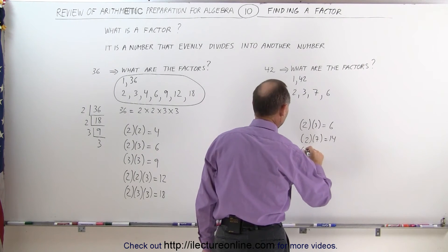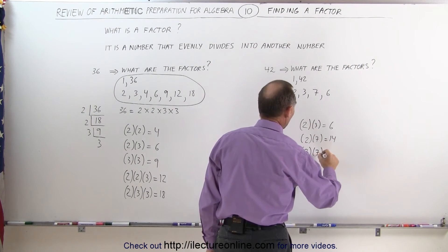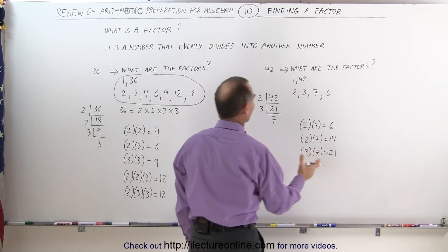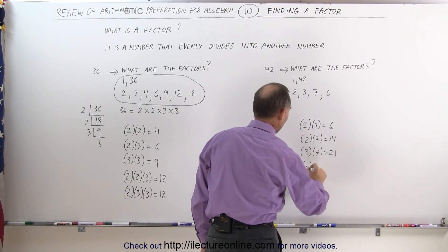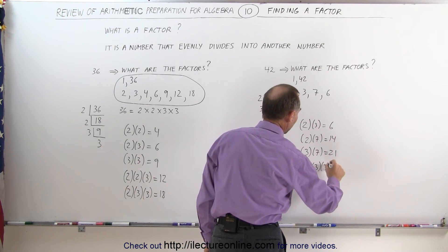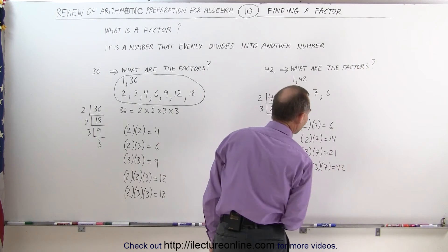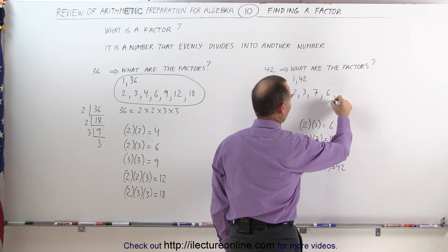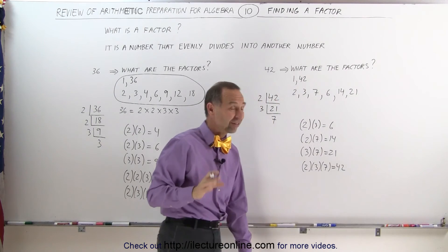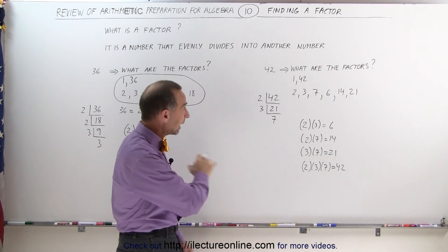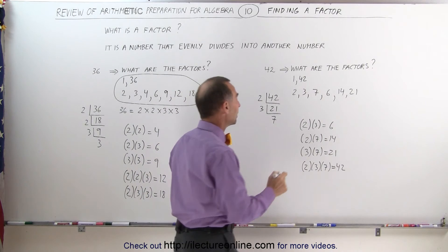Then the next multiplication, 3 times 7, which is 21. And then, of course, when you multiply all three of them together, that gives you 42. 2 times 3 times 7 is 42. But we already have that factor. So the other two are 14 and 21. Now, again, to check if we found all the factors, let's write them lined up from smallest to largest.